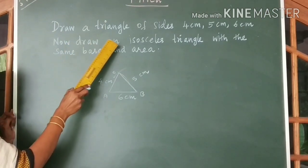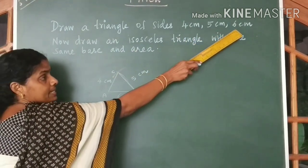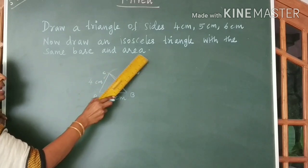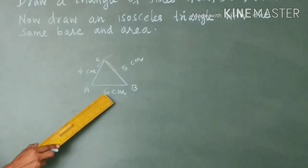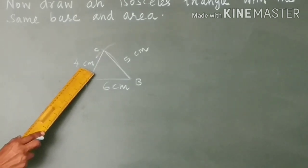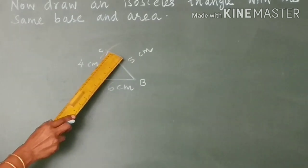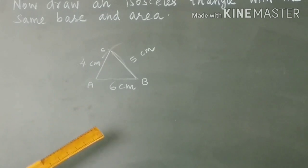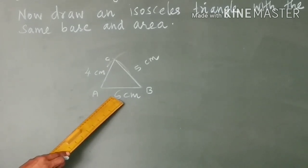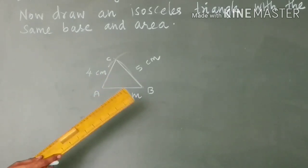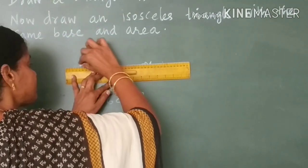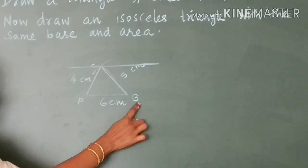The first question: draw a triangle of sides 4, 5, and 6 centimetre, then draw an isosceles triangle with the same base and area. Take 6 centimetre as base, draw two arcs for 4 and 5 centimetre, they meet at a point — join it. Now use our idea: triangles with the same base and third vertex on a line parallel to the base have same area.